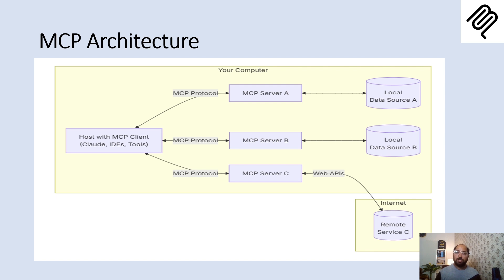Let us understand the architecture. We have a host with an MCP client — for example, Claude or Google Gemini, GitHub Copilot and IDEs — and these tools want to talk to a local data source or to the internet. What MCP provides is a server. It creates a server, and this server provides the integration with the local data source.